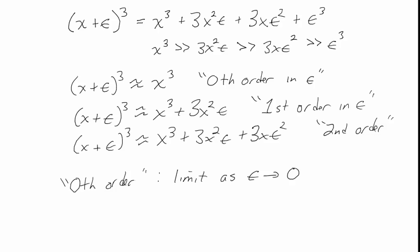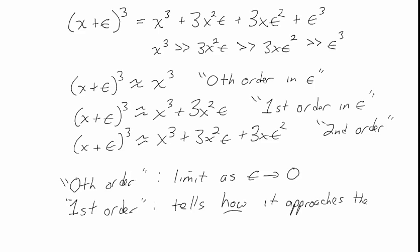The zeroth order limit tells you what the expression looks like when the variable completely vanishes. But if you want to know how the expression behaves as it gets smaller — what its behavior is as it approaches the limit — then you want to keep at least the first order term. The first order tells us how it approaches the limit, and that is often very important. For example, the electric field goes to zero as you get far from both a single charge and a dipole, but it goes to zero faster for the dipole. That's what a first order approximation would tell you.